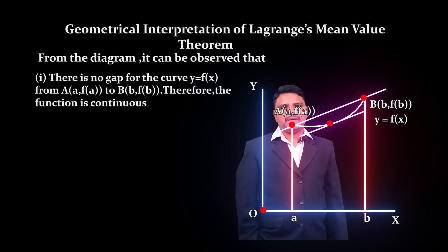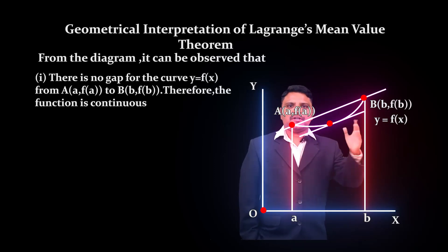Therefore, y = f(x) is a continuous function between A and B. There exists a unique tangent line at every point between A and B, meaning the function y = f(x) is differentiable.